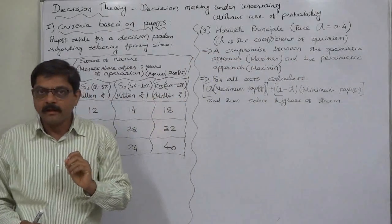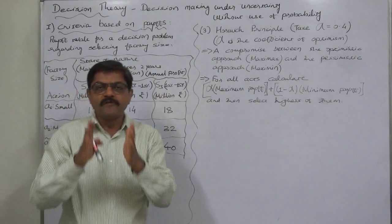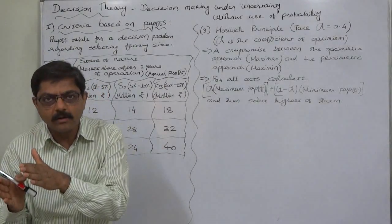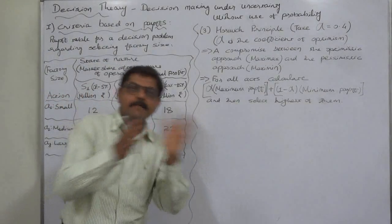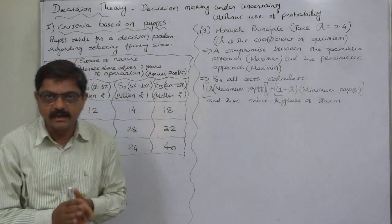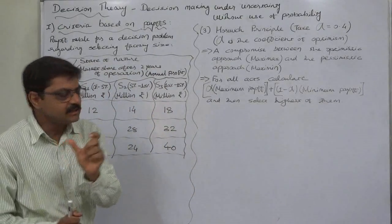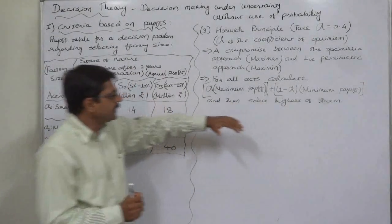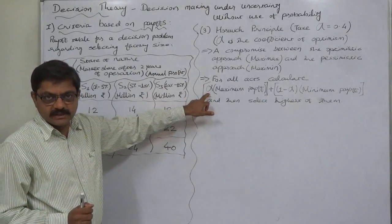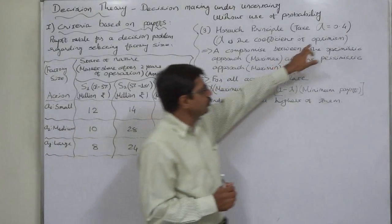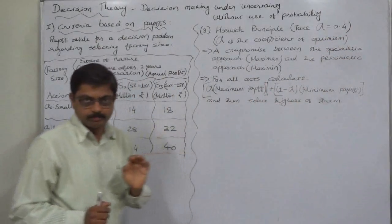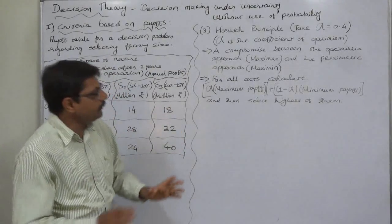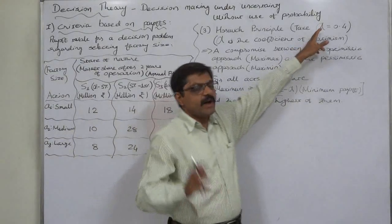If the total of the probabilities of a decision maker being optimistic and pessimistic is one, then alpha is the subjective probability of the decision maker being optimistic. Its value is always between 0 and 1. If the decision maker is not at all optimistic, then the value of alpha is 0.